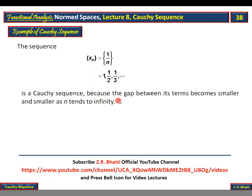It is a Cauchy sequence because the gap between its terms becomes smaller and smaller as n tends to infinity. As I explained, the distance between 1 and 1/2 is 1/2, between 1/2 and 1/3 it has decreased, and as you go further, the distances keep decreasing, the gaps keep reducing. So a Cauchy sequence is defined as: a sequence {xn} is said to be a Cauchy sequence if for every epsilon greater than zero, there exists a natural number n₀ such that ||xm - xn|| < ε for all m,n ≥ n₀.